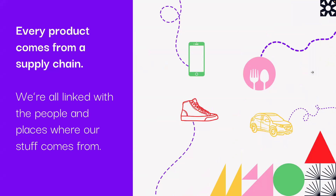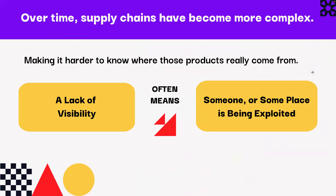Over time, supply chains have become more complex, making it harder to know where products really come from. Complexity creates a lack of visibility, and lack of visibility often means someone or some place is being exploited.